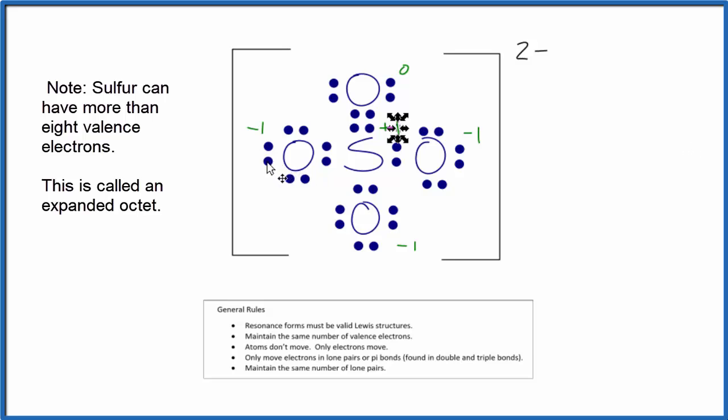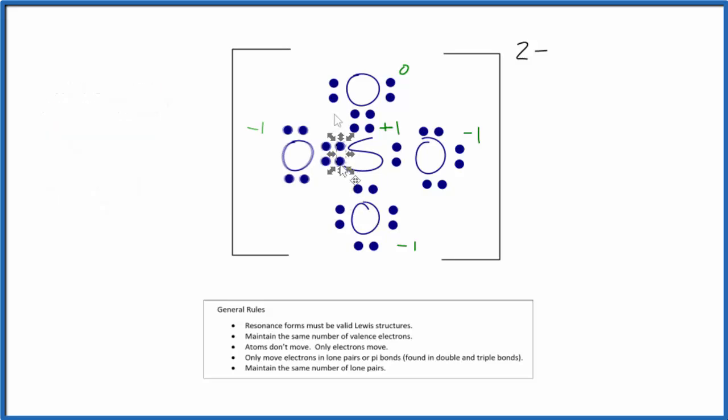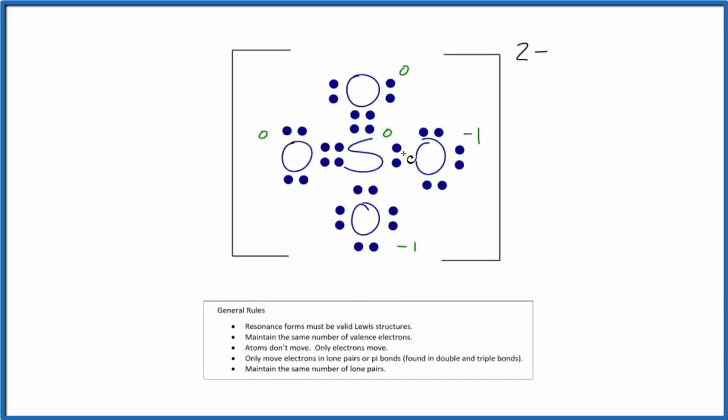But we could also push these two valence electrons here to form a double bond with the sulfur. And now the oxygen here has a formal charge of zero, and the sulfur is also zero. So these formal charges are a lot more favorable. That means this is a more likely Lewis structure.